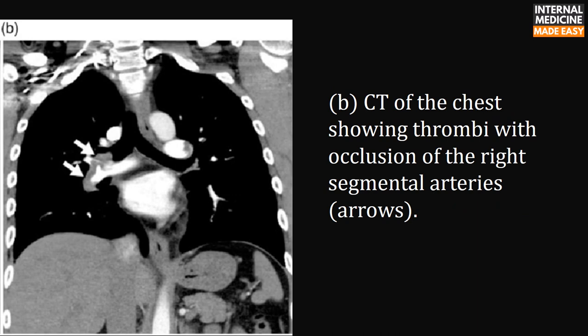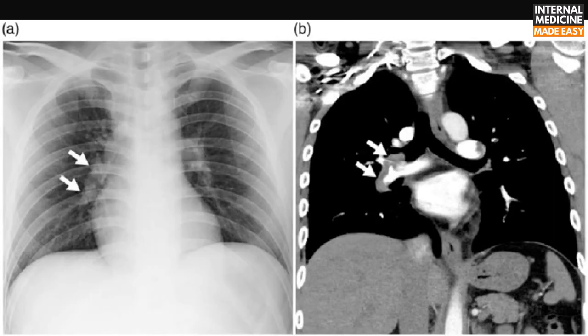CT chest of the same patient shows thrombi with occlusion of the right segmental arteries, indicated by arrows. The X-ray and CT are shown side by side for comparison.